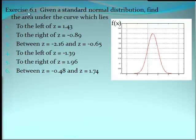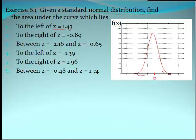For our first problem, we've got the standard normal distribution and we need to find the area under the curve. The first one is z = 1.43. We know the center at z = 0 is where the mean is for the standard normal distribution. So z = 1.43 is going to be somewhere out here, and we're looking for the area to the left of that value — which we can see will be close to 1.